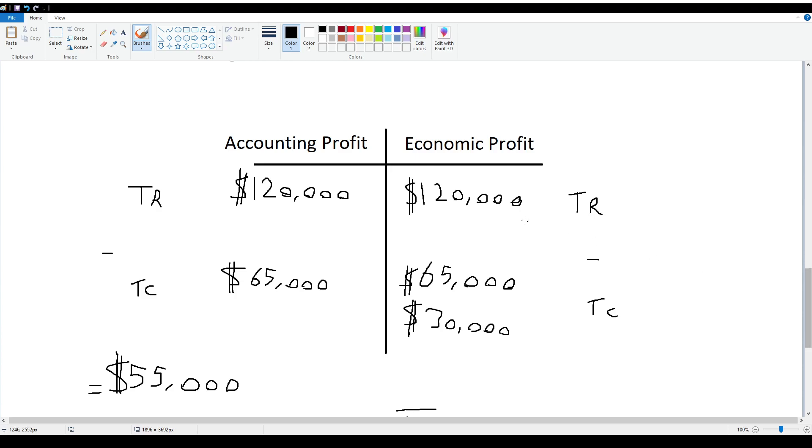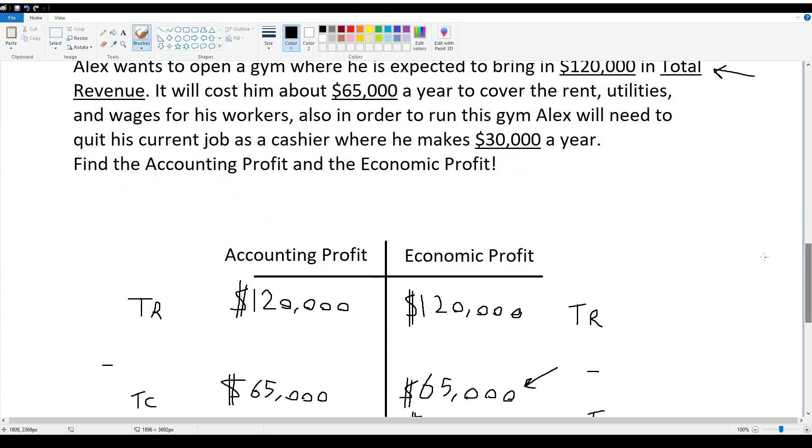Now economic profit is going to be a bit different. We're not only looking at the explicit cost of $65,000, we are also going to be looking at the implicit cost, which is noted over here as $30,000.